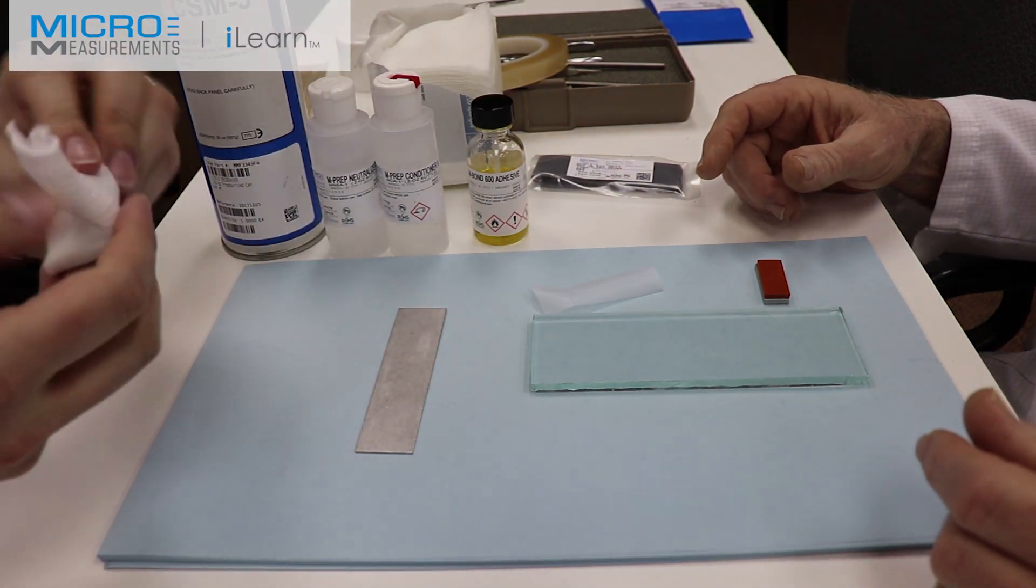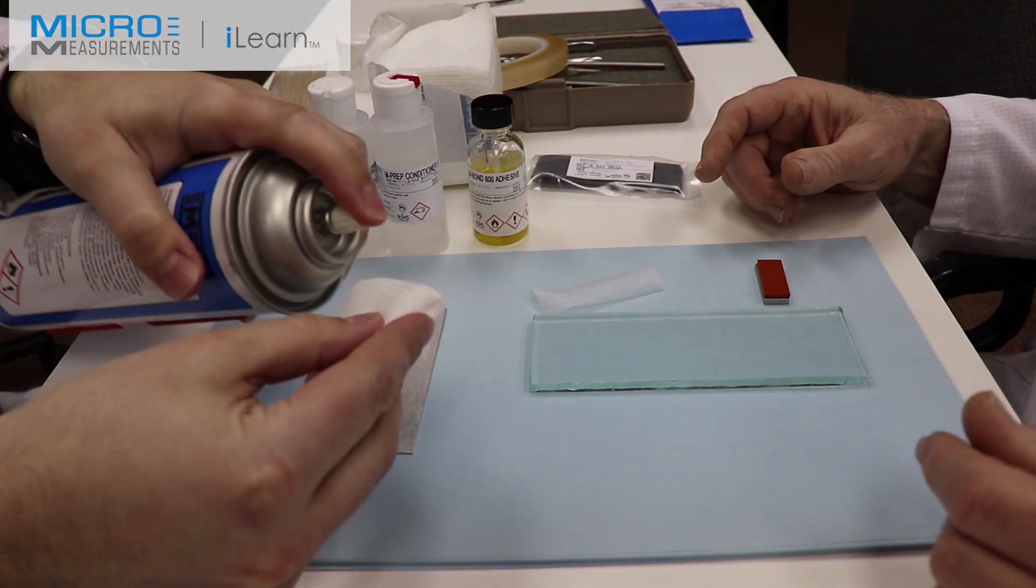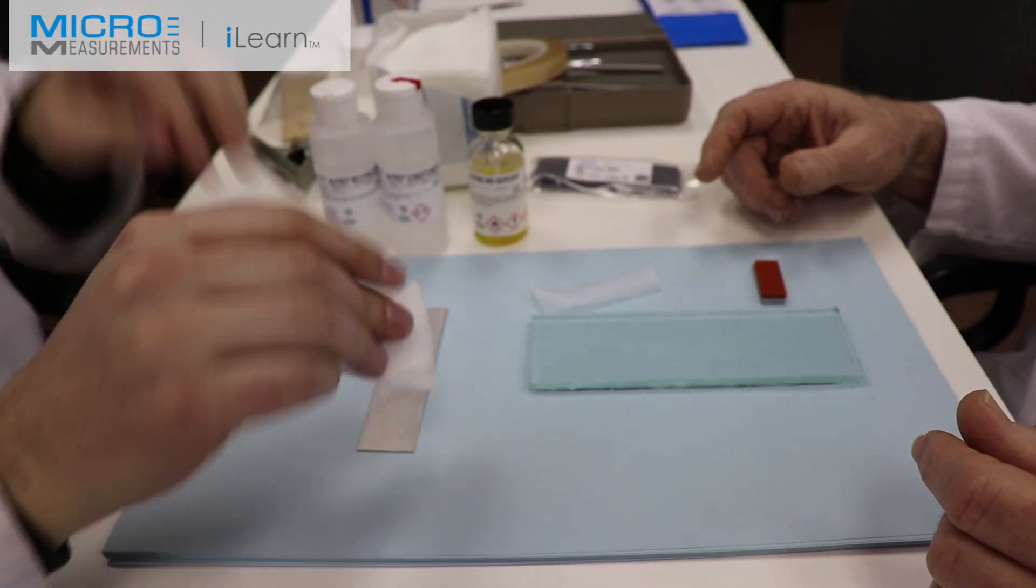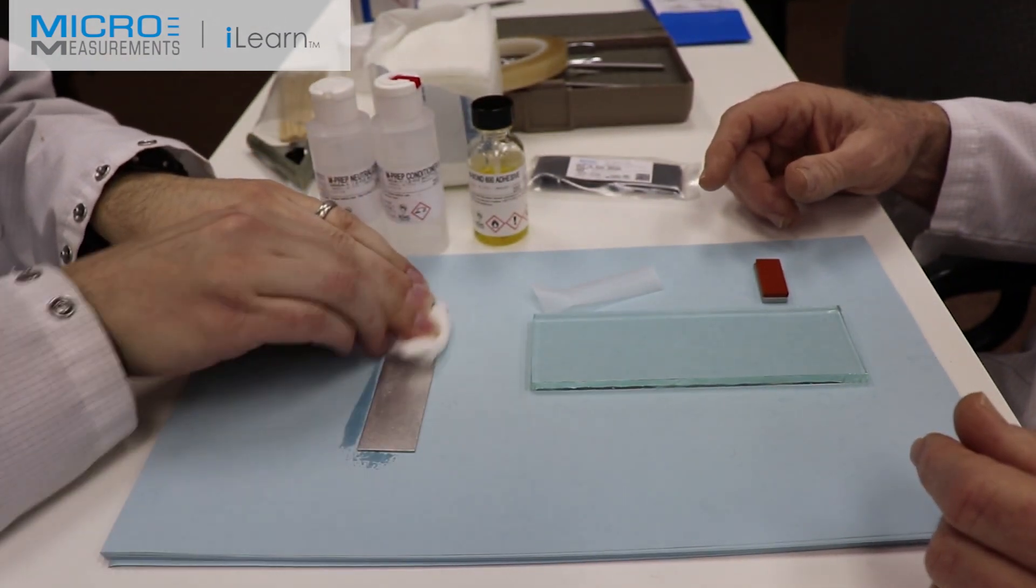He's going to take a dry gauze sponge, spray the CSM3 into the gauze sponge, and then degrease the entire surface.